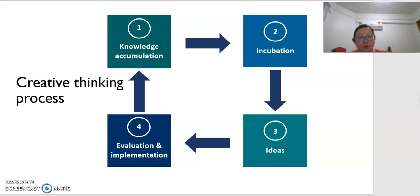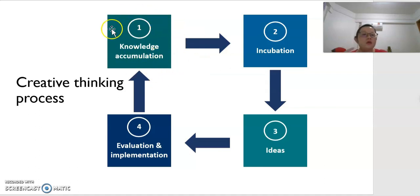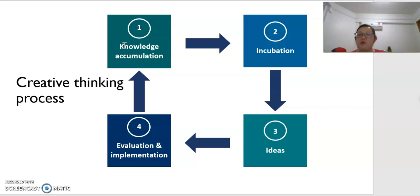When we talk about creativity, we always have a creative thinking process. It normally starts from knowledge accumulation — we need to accumulate our knowledge before we can think of new ideas. For example, the Uber founders got their idea from watching a James Bond movie. Knowledge can come from friends, experience, books, newspapers, or movies. With this knowledge, we start the incubation process — a thinking process where we look for the best ideas to produce new products and services.